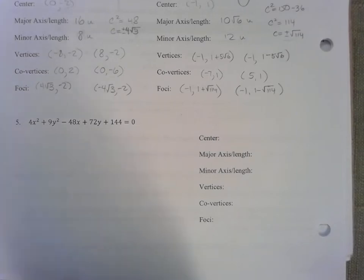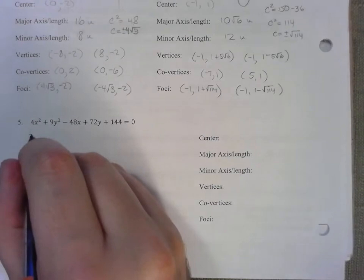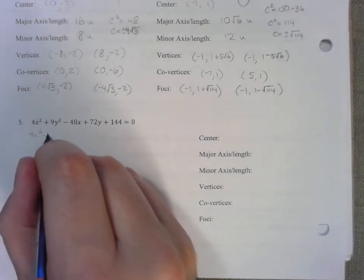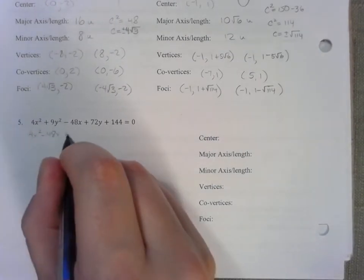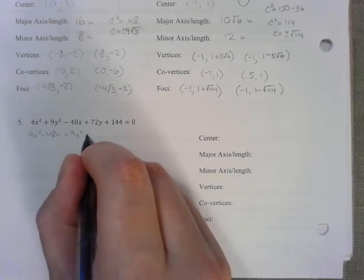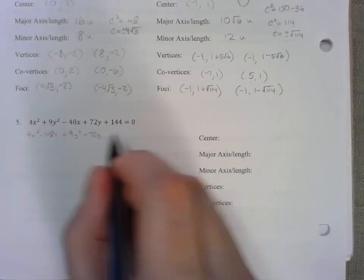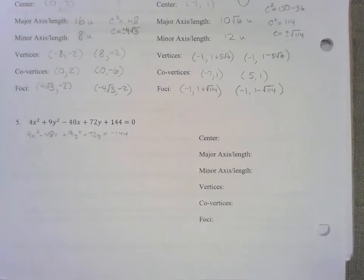I'm not going to complete a square right yet but I feel like we may have to. Let's group all of our x's together: 4x squared minus 48x plus 9y squared plus 72y. And I want to move that 144 to the other side by subtracting it from both sides.